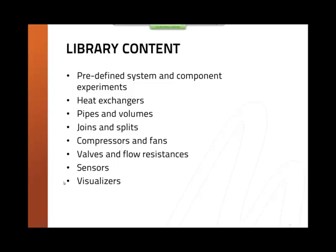The library contains a large number of predefined system and component experiments that you can adapt with few changes to your needs. It contains all the components required for system experiments: heat exchangers as a large part of the library, pipes and volumes, splits and joints to create a pipe network, compressors and fans, valves and flow resistors, sensors, and visualizers to display online some of the most important simulation results.